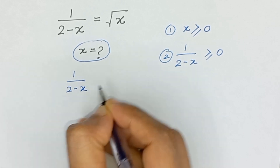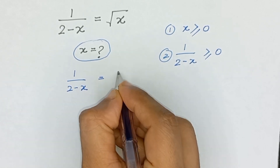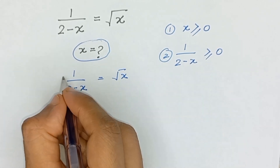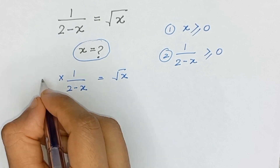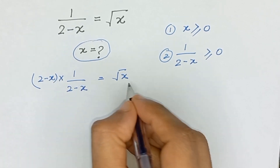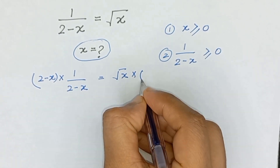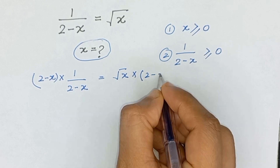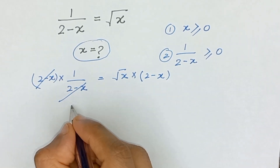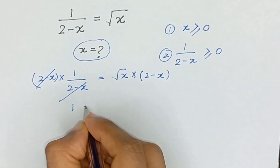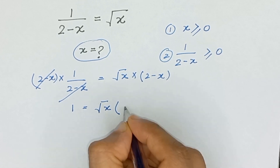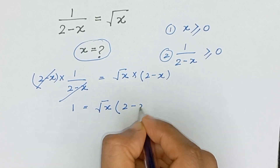Let's start our solution. We have 1 divided by 2 minus x is equal to square root of x. First, we will multiply 2 minus x on both sides to remove the denominator, so it cancels out and gives us 1 is equal to square root of x times 2 minus x.